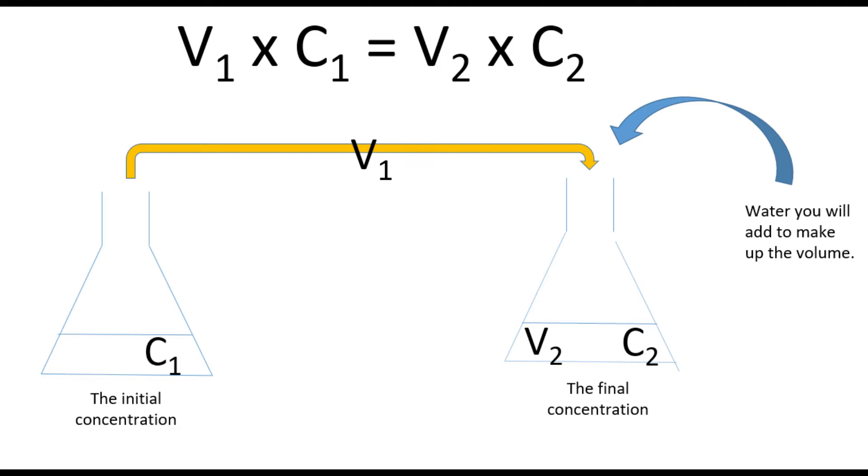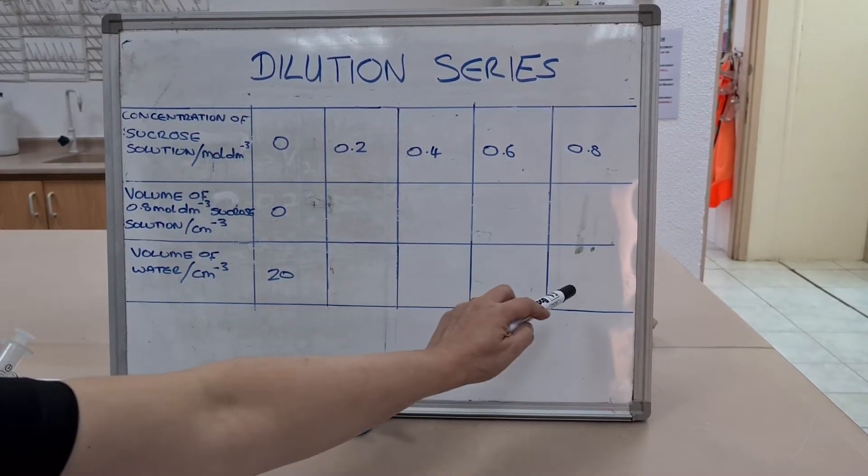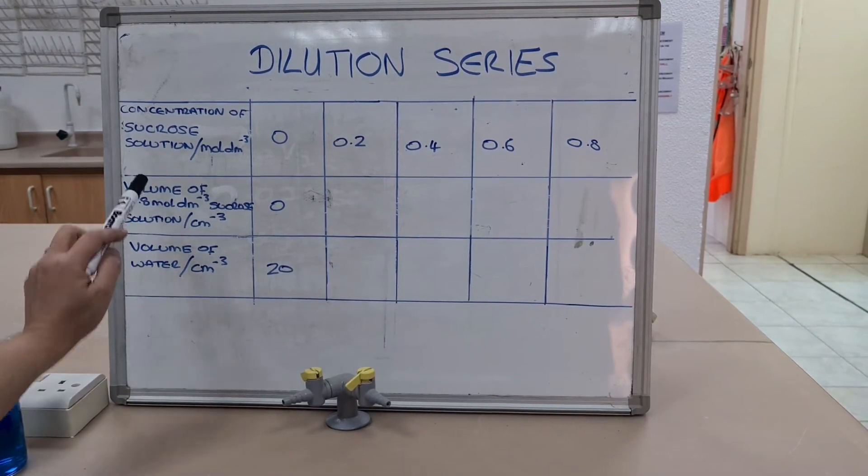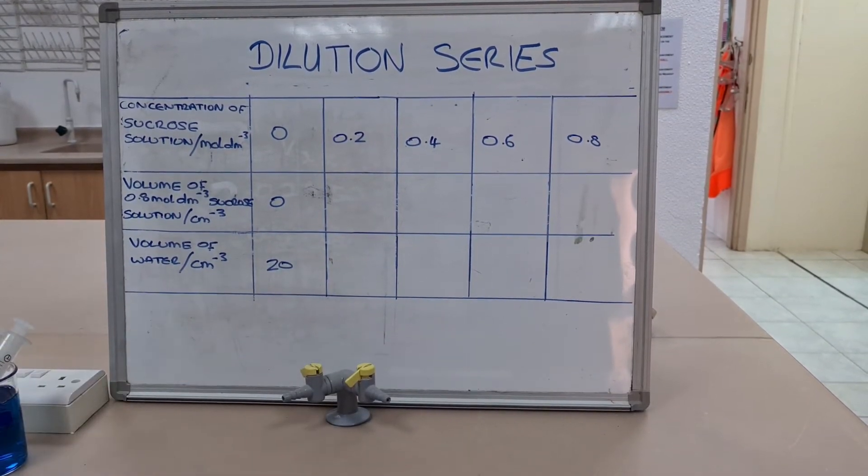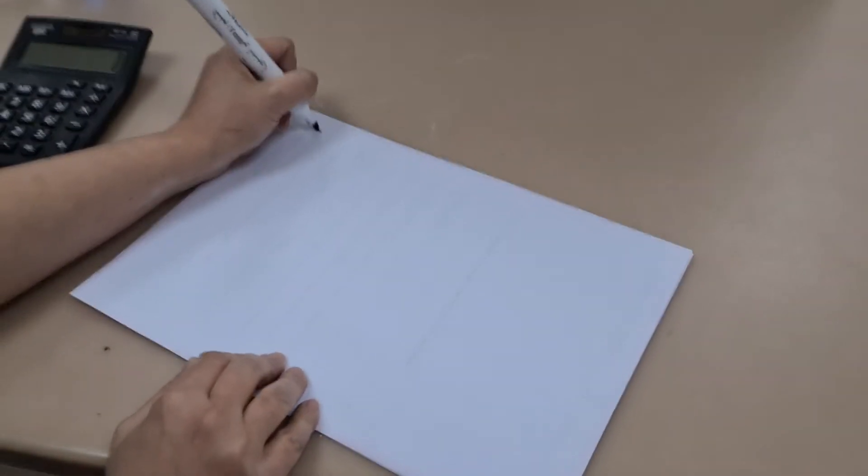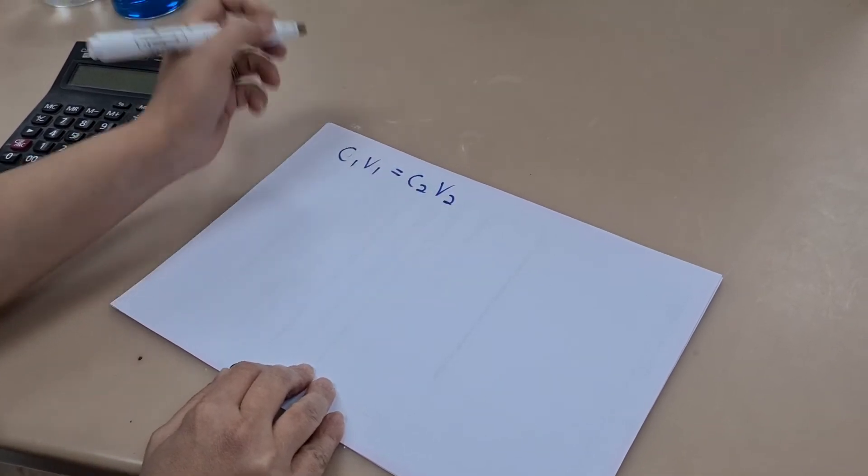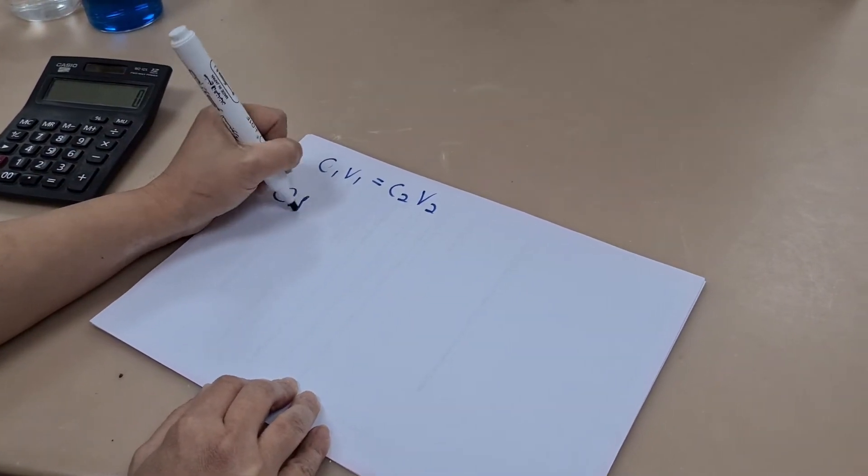Remember, what you don't have within this formula is how much water you will add to make it up to the 20 mils. And so we're doing a dilution series. We're going to be looking at the volume of 0.8 mol per decimeter cubed of our stock solution that we need to put in to make 20 mils of a dilution series. We're using the formula C1 times V1 equals C2 times V2.